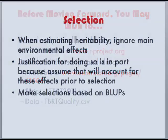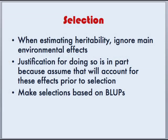Before moving forward — when we estimated our heritability, we ignored our main environmental effects. The justification for doing so is in part because it is assumed that we will take these into account prior to making selections. We can do this by making our selections based on BLUPs.